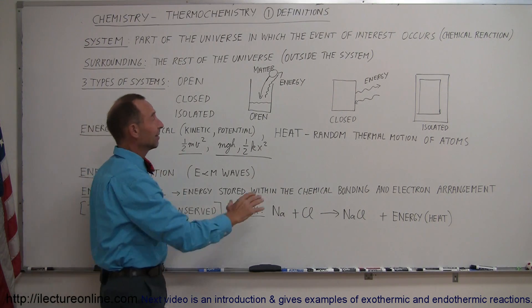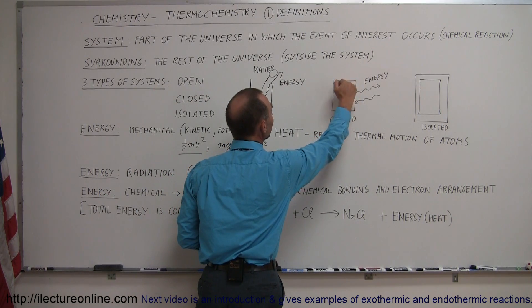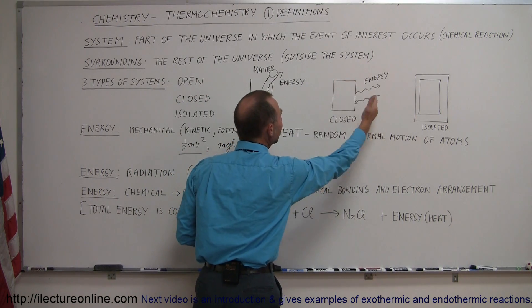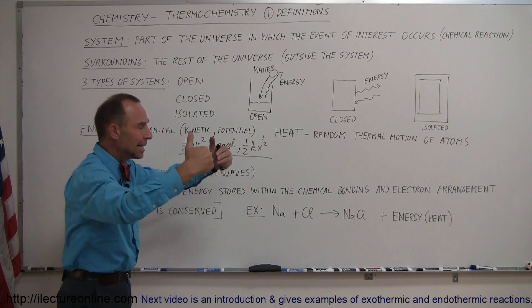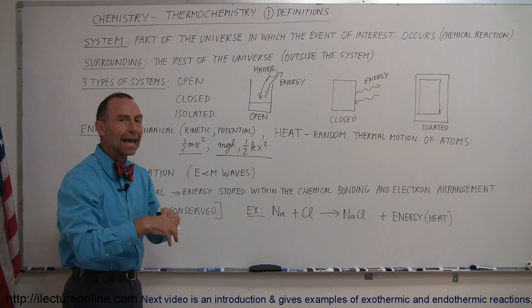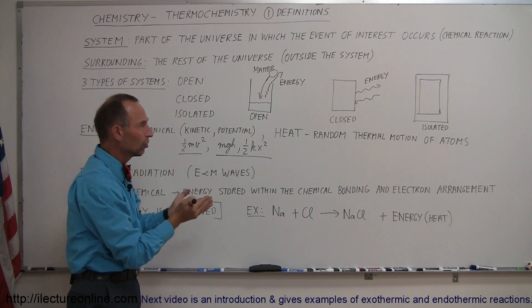A closed system is like this where no matter can be put in, but energy can still go in and out. For example, it can lose heat, energy can go out, it can gain heat, energy can go in, but you can't add or take out any matter. It's a closed system in that respect.